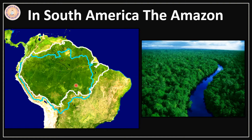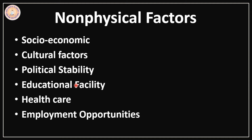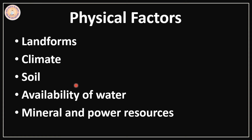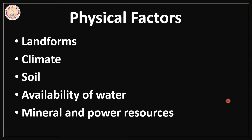So the distribution of population is influenced by various factors which may be physical factors and also some non-physical factors. Physical factors are determined by nature. The non-physical factors are on the other hand products of human activities and are also known as human factors. So let us first concentrate on the physical factors, which include landforms, climate, soil, water availability and mineral and power resources.